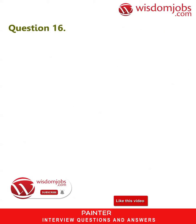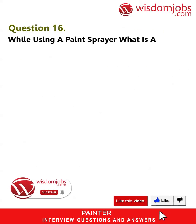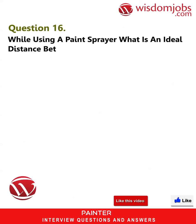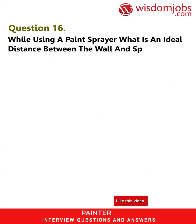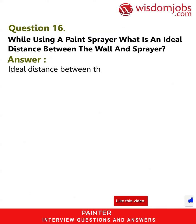Question 16: While using a paint sprayer, what is the ideal distance between the wall and the sprayer? Answer: The ideal distance between the wall and the sprayer is 12 to 24 inches.